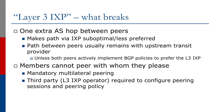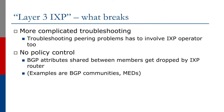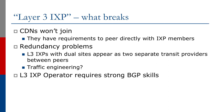There's more complicated troubleshooting — peering problems require the exchange point operator to be involved as well. There's no policy control, and BGP attributes shared between members get dropped by the exchange point router. Common examples of those dropped attributes include BGP communities and multi-exit discriminators.